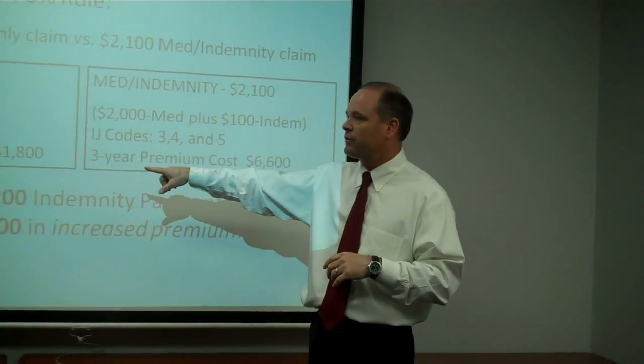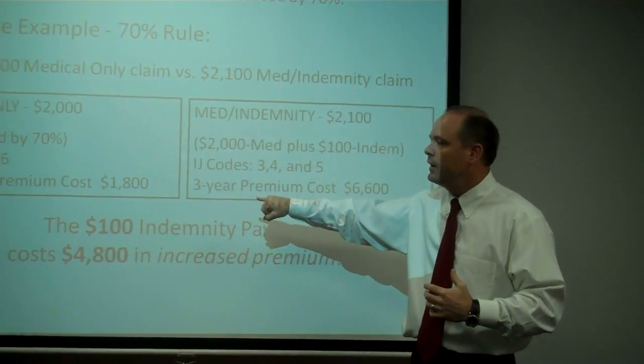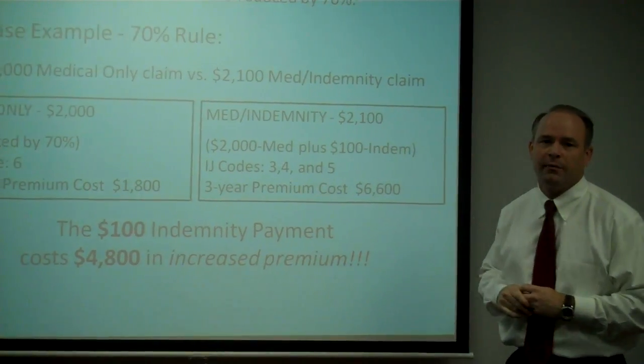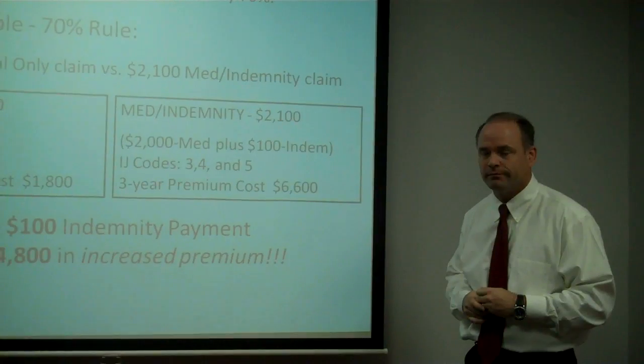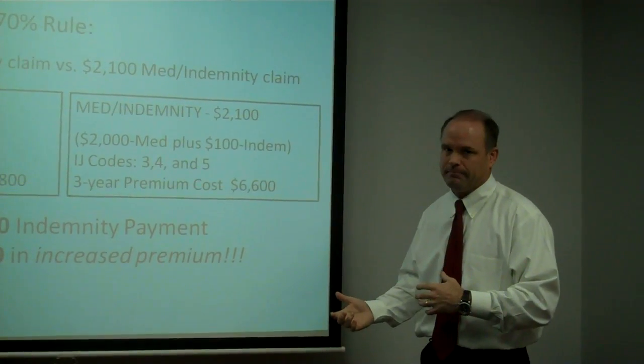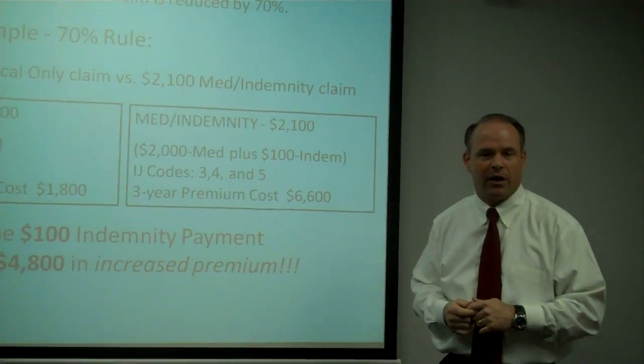What we did was, and by the way, the three year premium cost, everybody knows that you live with a claim for three years, the three year additional cost for having that one claim in this particular insurance history is $1,800 additional dollars. The insurance company paid $2,000, the insured is going to pay an additional $1,800.